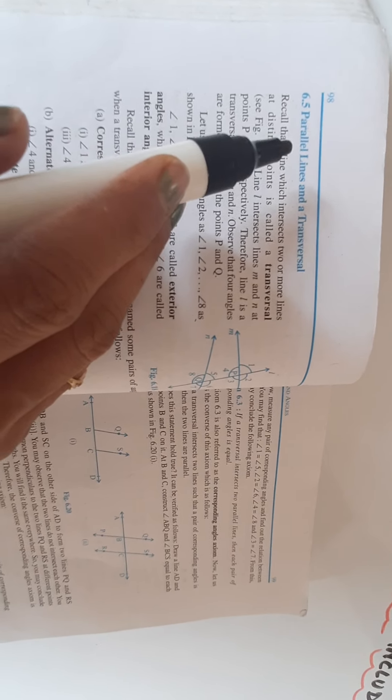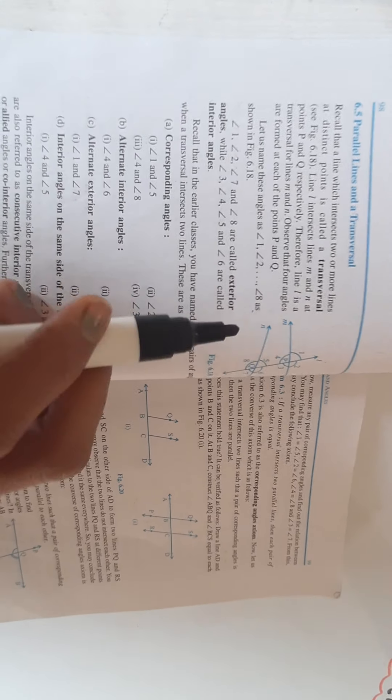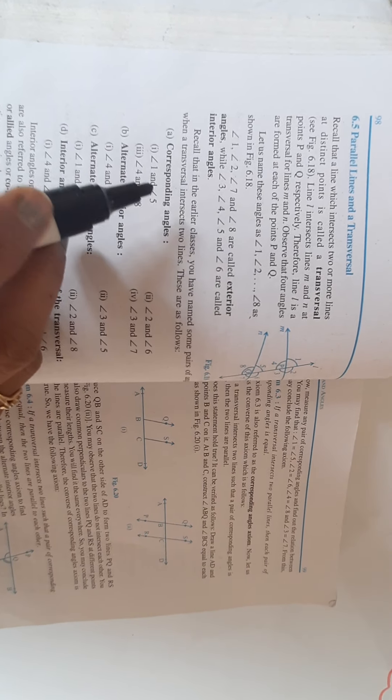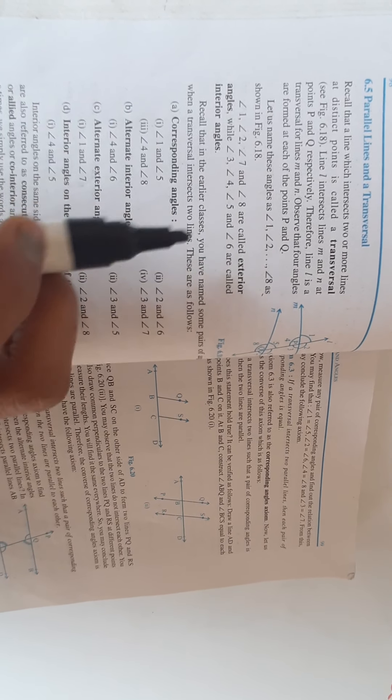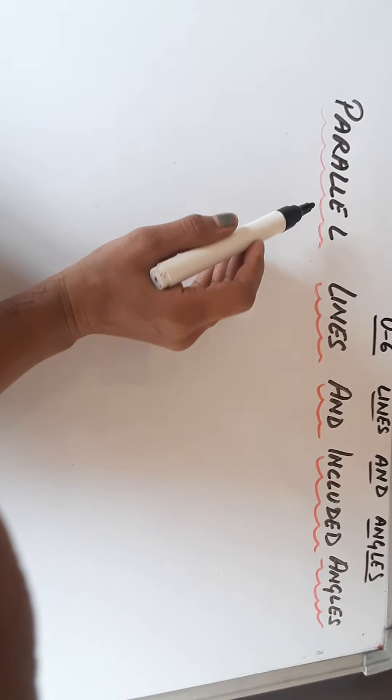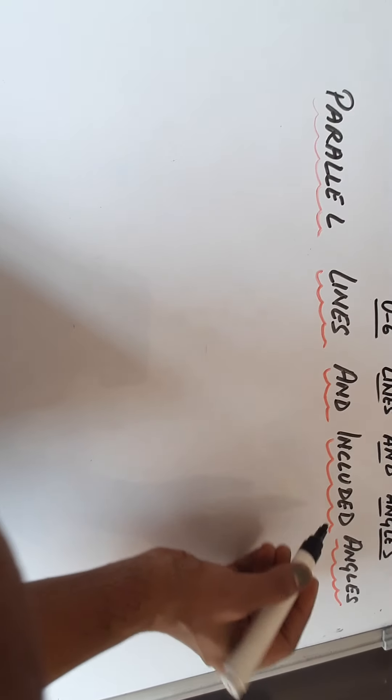In your NCERT book on page number 98, we have parallel lines and a transversal. Now if these are the parallel lines, then we have many types of angles like exterior angles, interior angles, corresponding angles, alternate interior angles, alternate exterior angles, and interior angles on the same side of the transversal. So before starting the concept, let us discuss all these angles and how to recognize them.